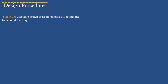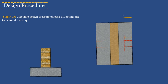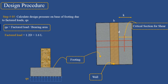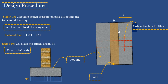Step 5: Calculate the design pressure on the base of the footing due to factored loads. qu equals the factored load divided by the bearing area. Step 6: Calculate the critical shear for one-way shear, which equals 2 × B × (k − d). Only one-way shear is significant in wall footing; the critical shear is determined at distance d from the face of the support.